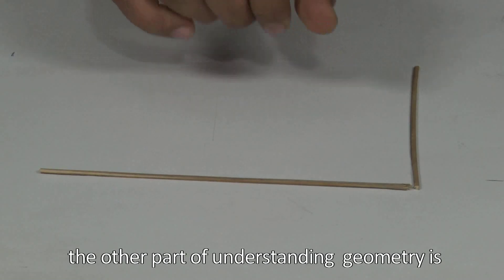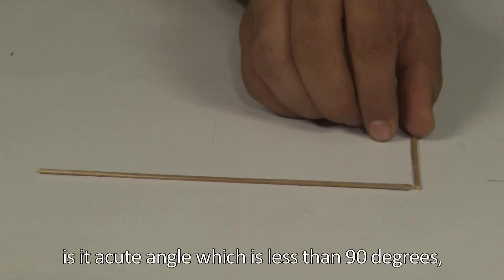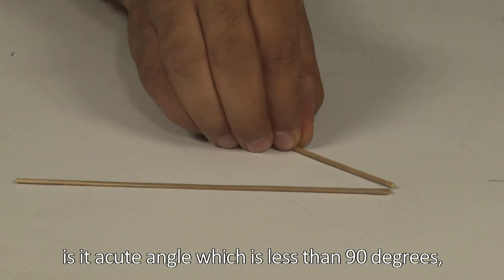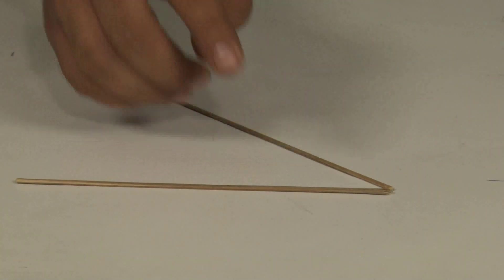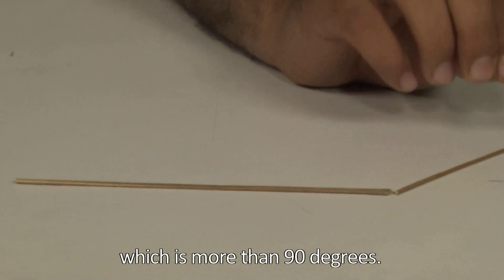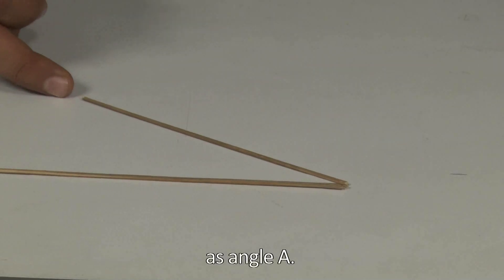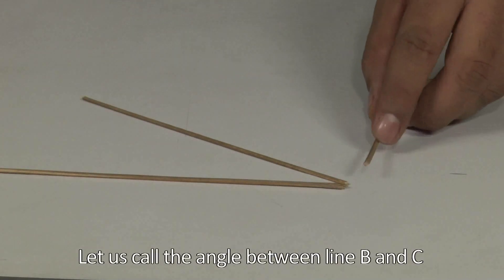part of understanding geometry is what kind of angle is it. Is it a right angle, which is 90 degrees? Is it an acute angle, which is less than 90 degrees? Or is it an obtuse angle, which is more than 90 degrees? So let's call this angle between line A and line B as angle A. Let's call the angle between line B and line C as angle B.